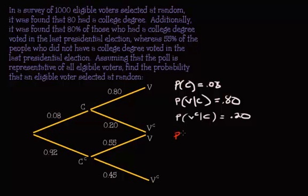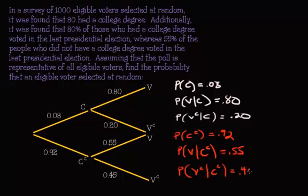Then we have the probability that you do not have a college degree, that's 0.92. The probability that you voted given you do not have a college degree, that's 0.55. And then the probability that you did not vote given you do not have a college degree, that is 0.45.